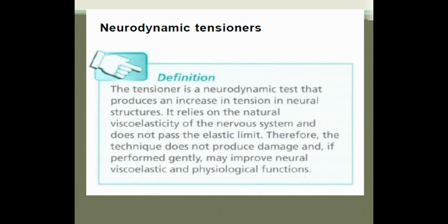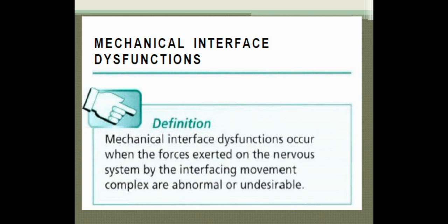A tensioner is a neurodynamic technique that produces an increase in tension in the neural structure. It relies on the natural viscoelasticity of the nervous system and does not pass the elastic limit; therefore the technique does not produce damage, and if performed gently may improve neural viscoelastic and physiological function. In sliders, there is just sliding movement of the nerve. In tensioners, additional tension is generated in the neural structure, which improves elasticity of the nerve tissue, physiological function, and even restriction of blood flow to the nerve tissue can improve.